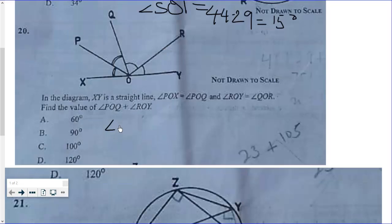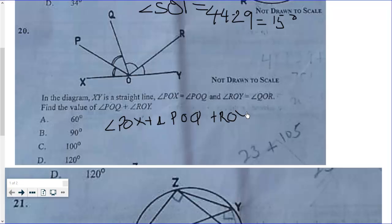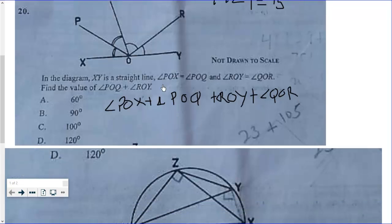So we have angle POX plus angle POQ plus angle QOR equal to 180 degrees. Now there is a condition given to us that angle POX is equal to angle POQ, so whenever we see angle POX we can substitute angle POQ.